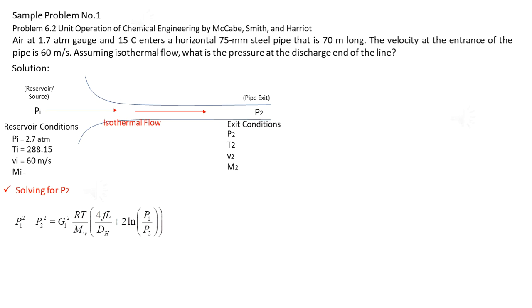Solving for the exit pressure, we have the equation, and let's solve for the unknown variables. Mass velocity G1 is equals to 198.7 kg per meter squared seconds. Solving for the friction factor.